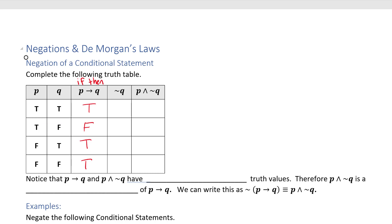Next we want to work on P and not Q. I'm going to have to do not Q first. I'm looking at the Q column and I want to do the negation of the Q column. So that's going to be: not true is false, not false is true, not true is false, not false is true. Remember that negation just changes its sign.